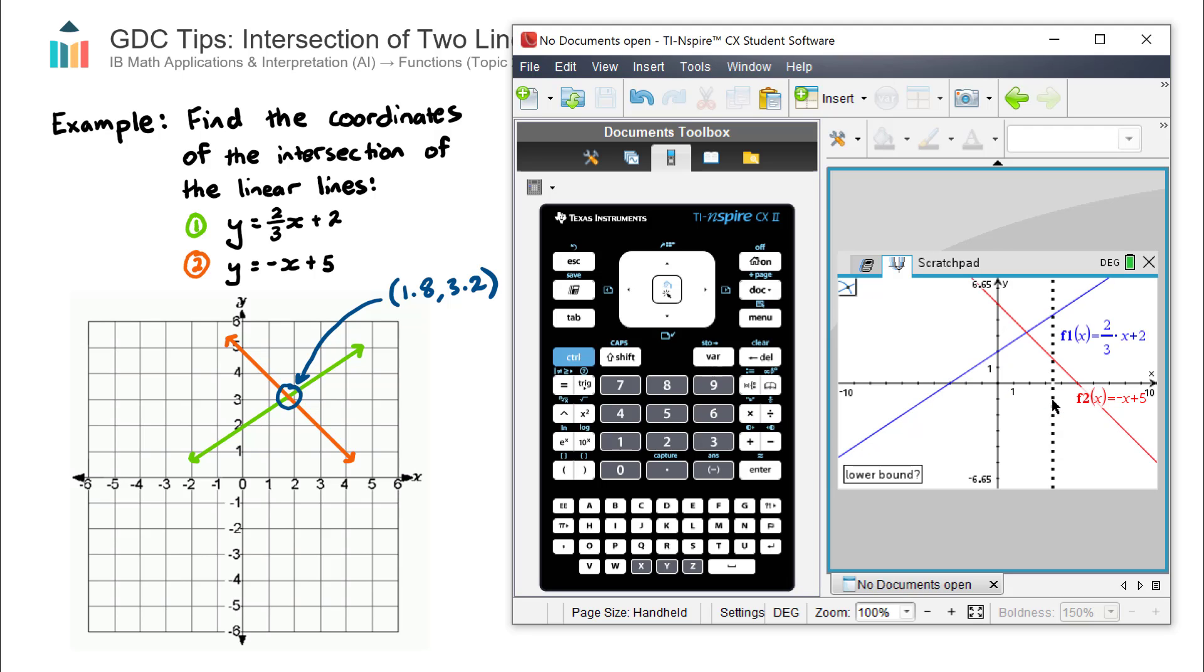Now the calculator asks you to give it direction as to where this intersection occurs. Because if you have multiple lines, there could actually be multiple intersections. So when it asks for lower bounds, you just drag your cursor just to the left of where the intersection occurs and then click or hit enter. And then the upper bound is just to the right. So that's basically saying to the calculator, the intersection occurs somewhere in this shaded region. Hit click there.